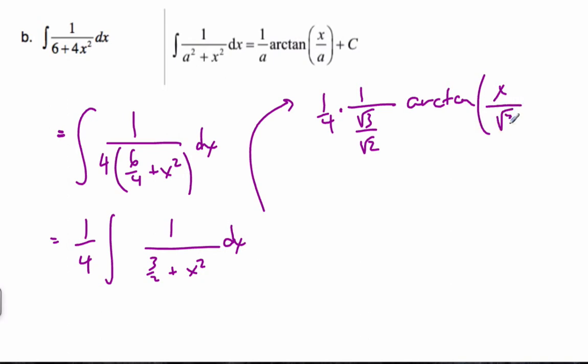x over a, which again, is root 3, excuse me, over root 2, plus c. And tidying this thing up, we end up with 1 over 4 root 3, and root 2 on the top. Arctan, arctan, and then I get root 2x over root 3, plus c.